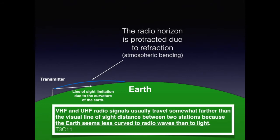It's easy to visualize line of sight communication, but over-the-horizon communications requires a bit more imagination. The radio horizon is a point where the line of sight ends. Radio waves travel beyond the radio horizon due to refraction or atmospheric bending. For the exam, remember that VHF and UHF radio signals usually travel somewhat further than the visual line of sight distance between two stations because the Earth seems less curved to radio waves than to light.